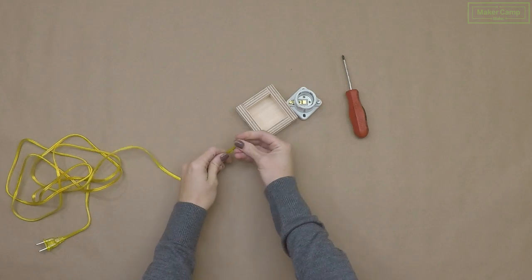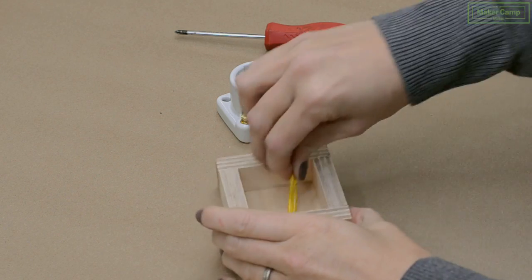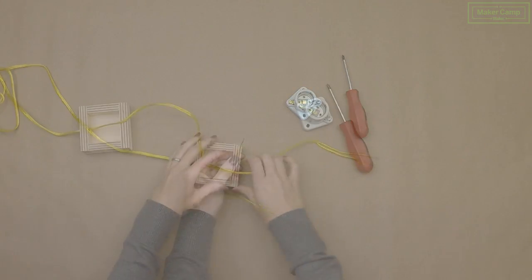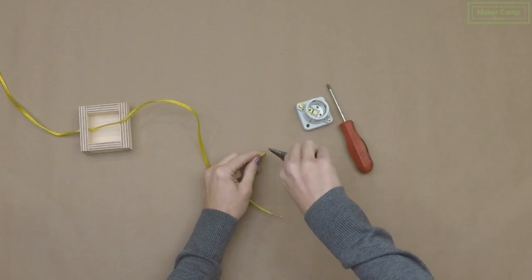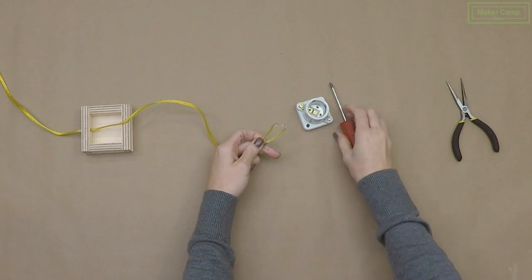Now feed your lamp cord all the way through your hole. Give yourself a lot of room to wire up your lamp socket. Use your needle nose pliers to curve the ends of your wire. Make sure you read the instructions that came with your lamp socket.